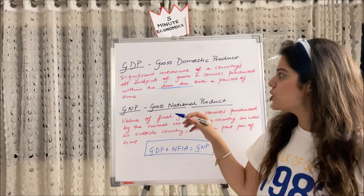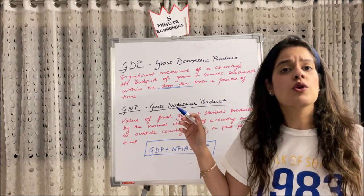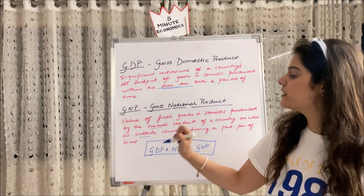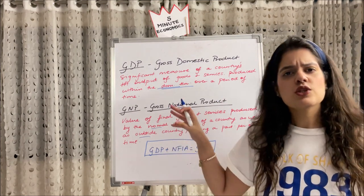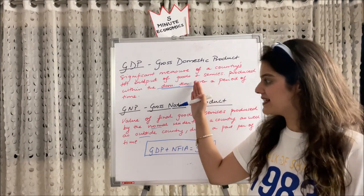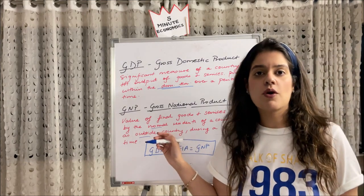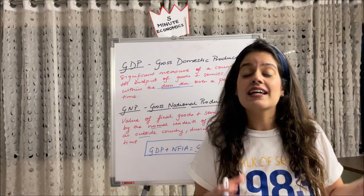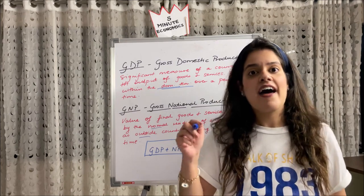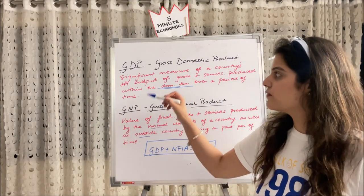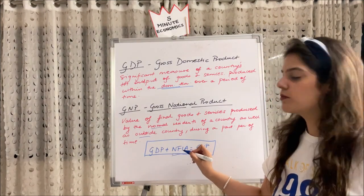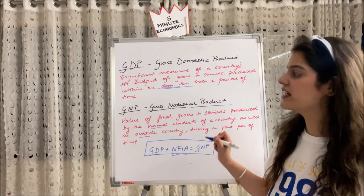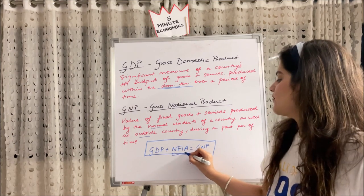Gross National Product is the value of final goods and services produced by the normal residents — those whose economic interest lies in the country as well as outside it — during a particular period of time. Both GDP and GNP are flow concepts. The difference: GDP covers what is produced domestically, whereas GNP covers production by normal residents from within the country as well as abroad. For example, if I work for Deloitte US, my income comes from the US but I spend in India, so it is included in India's national income. To get GNP from GDP, we add NFIA — Net Factor Income from Abroad. So: GDP + NFIA = GNP.